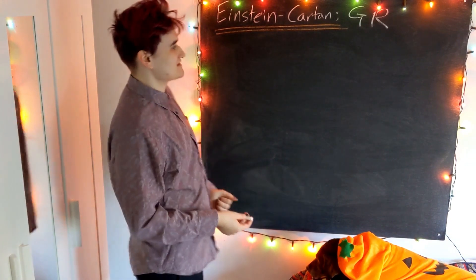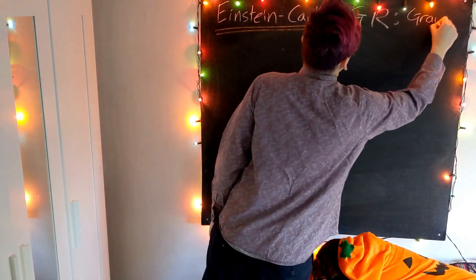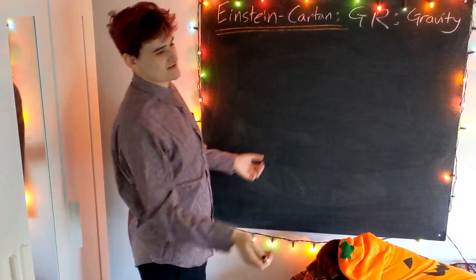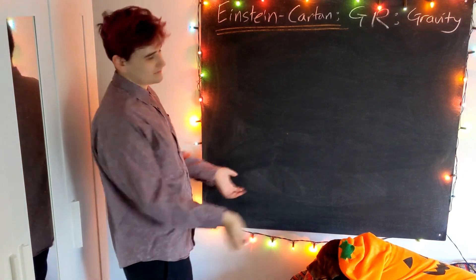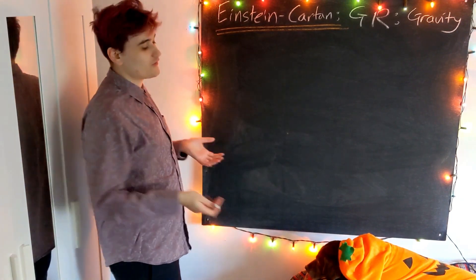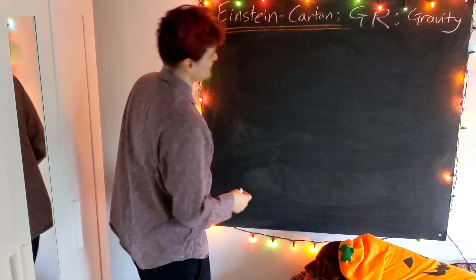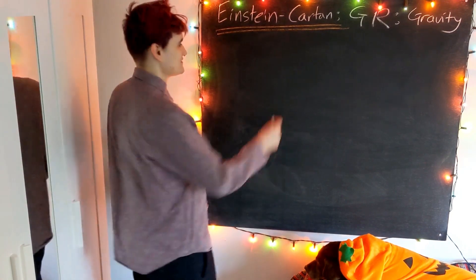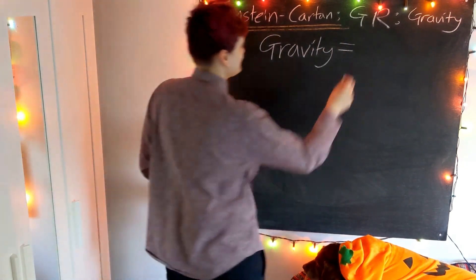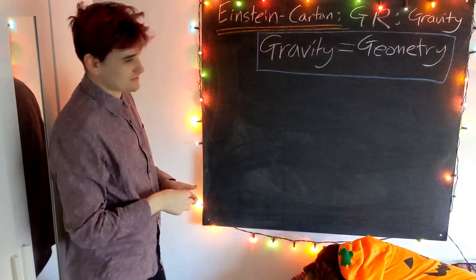First of all, what is general relativity? It's a theory of gravity, and it can essentially be summed up in the following relation. This is the profound realization that Einstein had: that gravity is not a force, but is in fact a consequence of spacetime curvature. Gravity is essentially the same thing as geometry.